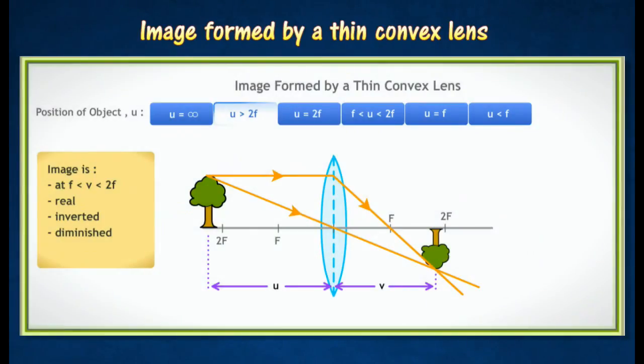When the object is placed further away from F, the image will appear between F and 2F. The image is real, inverted, and diminished. It is used as a lens in the human eye and also as a camera lens.